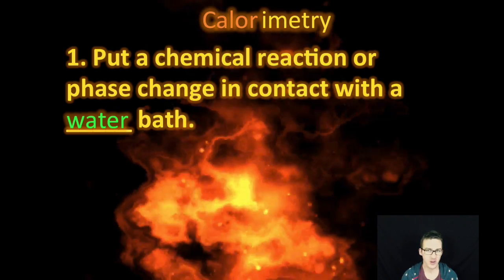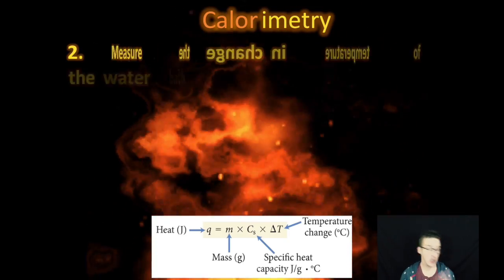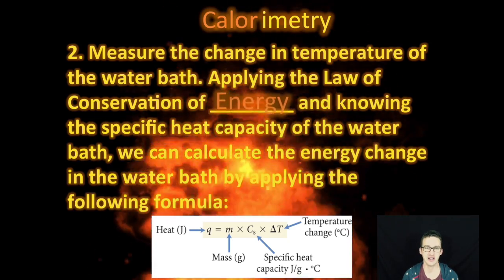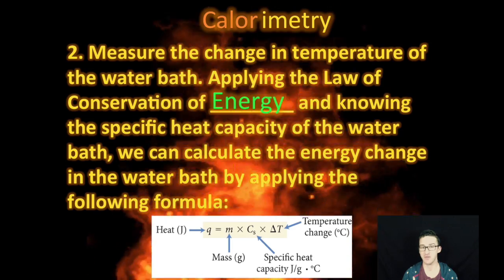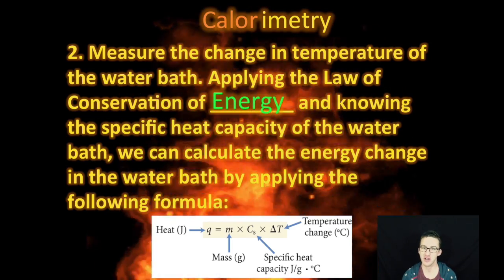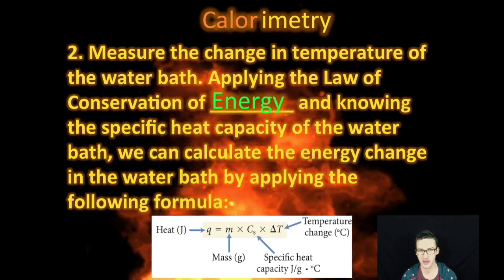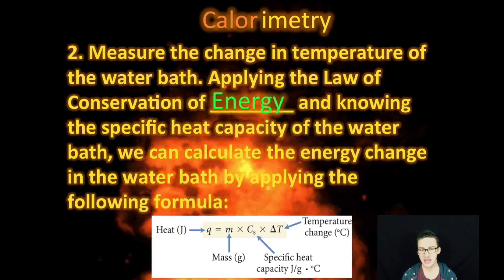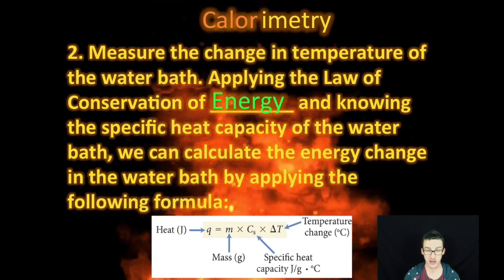One, put your chemical reaction or phase change in contact with a water bath. And two, simply recognize that the law of conservation of energy means that if you can determine the temperature change of the water bath, you can calculate the energy change using the Q equals MC delta T formula. Applying that law of conservation of energy, you can then tell how much heat was given off or absorbed by your chemical reaction or phase change.